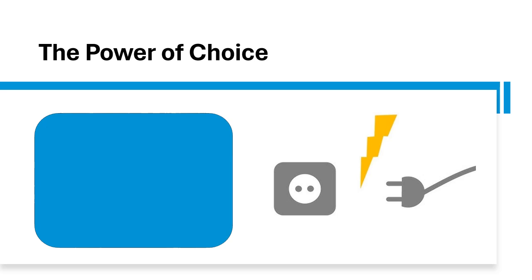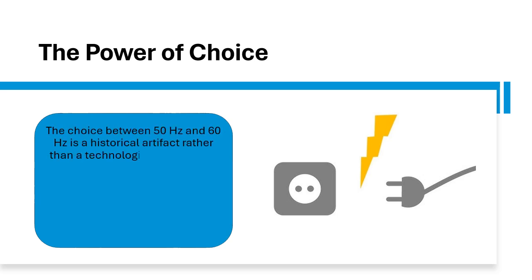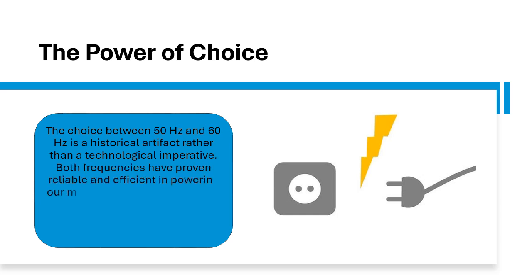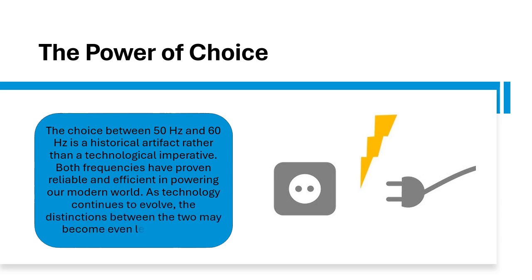The power of choice. The choice between 50 Hz and 60 Hz is a historical artifact rather than a technological imperative. Both frequencies have proven reliable and efficient in powering our modern world. As technology continues to evolve, the distinctions between the two may become even less relevant.